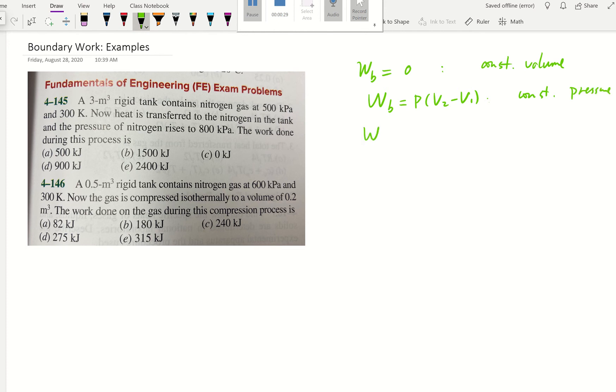And the boundary work would be equal to MRT natural log V2 over V1, or P1 V1 natural log V2 over V1, or replace that with P2 V2 natural log V2 over V1 if this is ideal gas and also have to be isothermal.